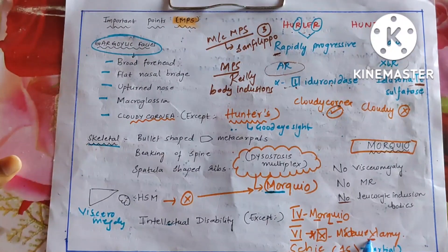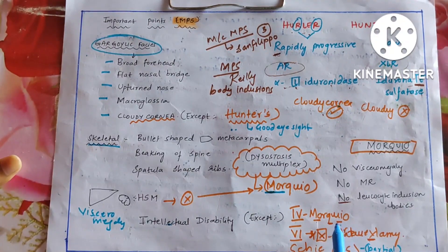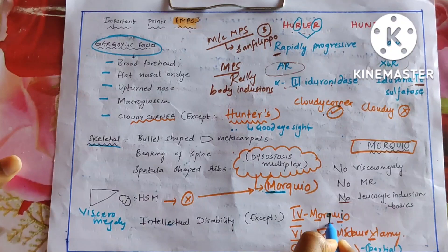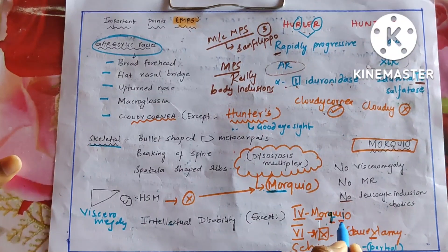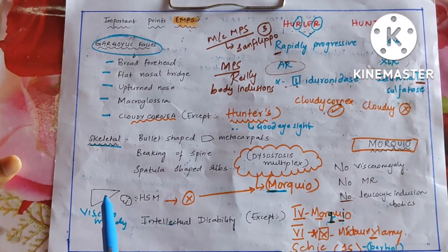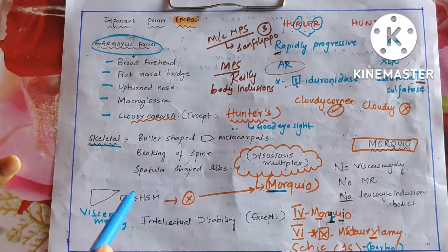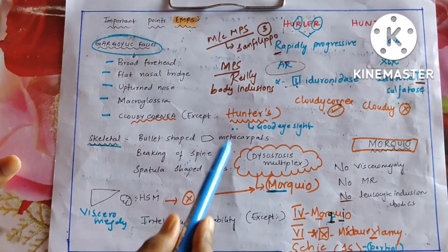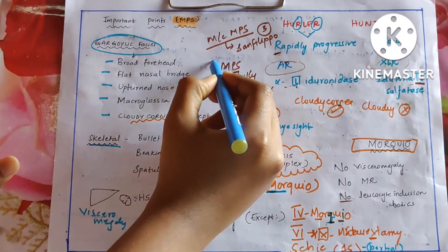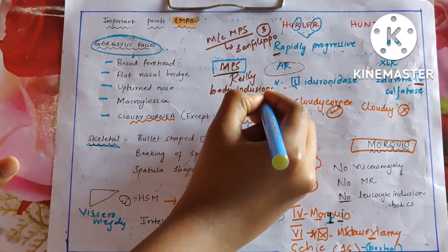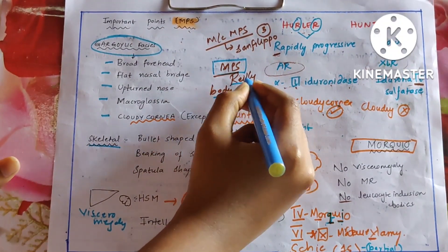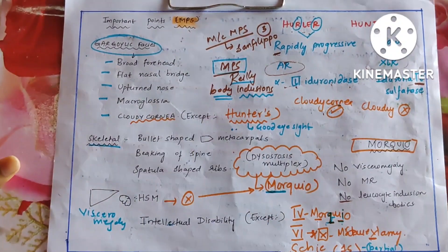Four is Morquio — remember it has more IQ (I and Q in it). Six is X — that is Moroteaux-Lamy. And Scheie's, which is the partial deficiency of alpha-L-iduronidase. Coming to inclusions: MPS have Reilly body inclusions in the lysosomes, but Morquio disease does not have any inclusions, no mental retardation, and no visceromegaly.